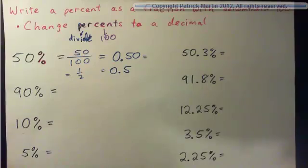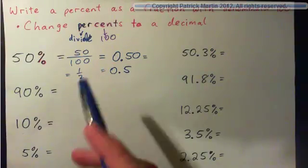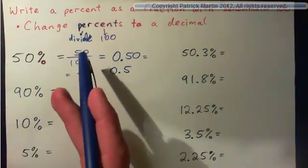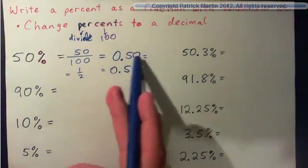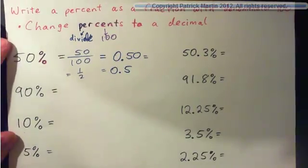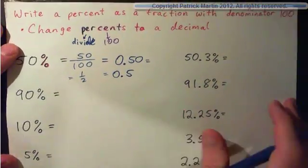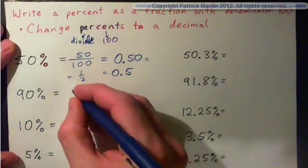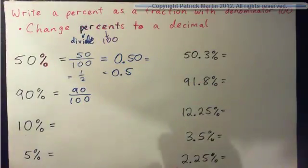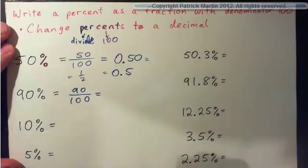In these examples, we're not even going to put the fraction in lowest terms. We're just going to go from percent to fraction with denominator 100 and then decimal and that's it. So 90%, 90% of students pass this class. That's 90 out of every 100 that take the class.